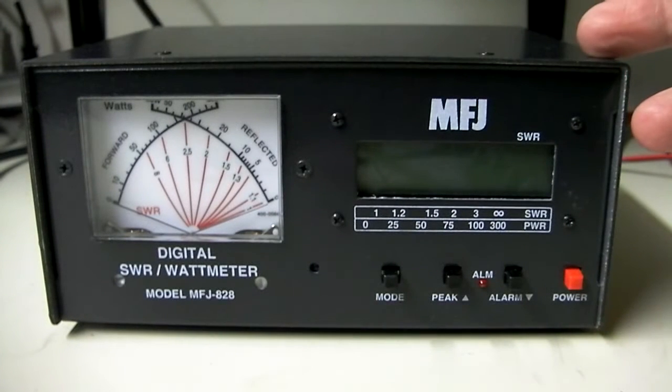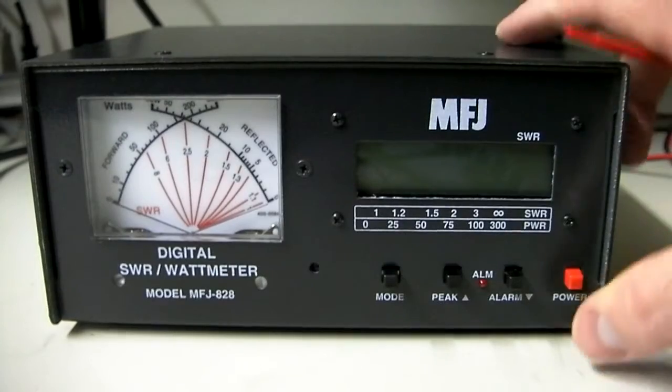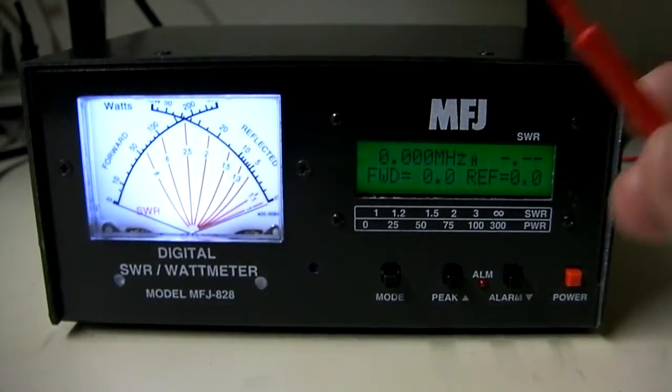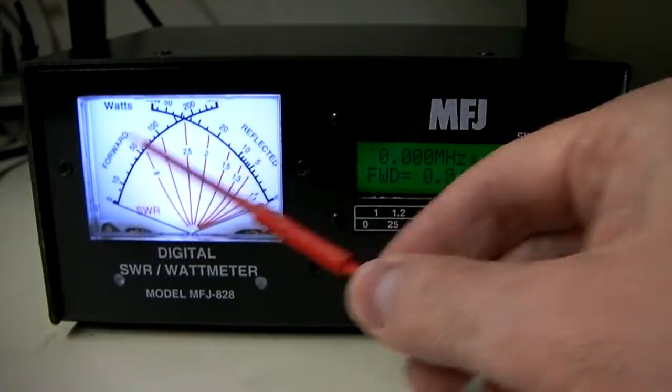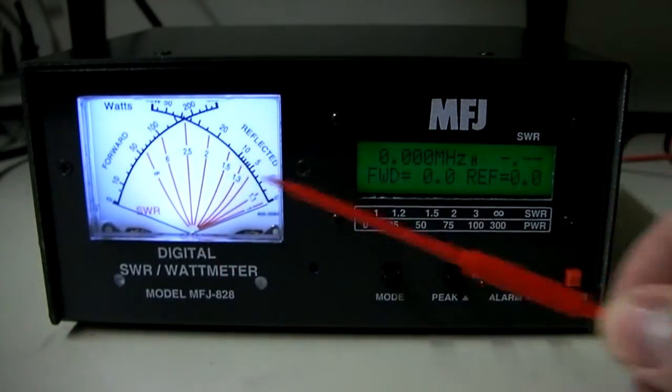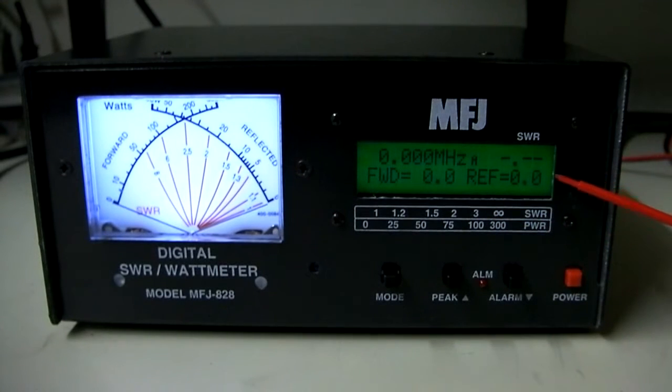The meter does require a 12-volt power source. It comes with the wire. It's just a negative-positive wire that plugs in the back, so you will need to hook that up to a power supply, or you're going to have to find yourself an adapter that will work for plugging directly into AC. So we turn the power on, and you'll see the light. This is a lit display over here, so it does have a backlight on it.